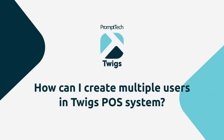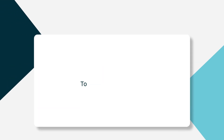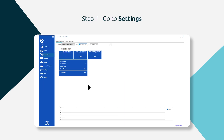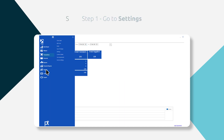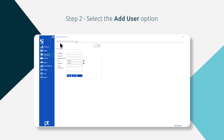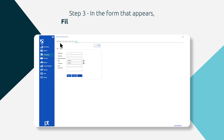How can I create multiple users in Twigs POS system? To create multiple users: Step one, go to Settings. Step two, select the Add User option. Step three, in the form that appears, fill in all the details and choose a role.